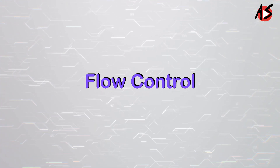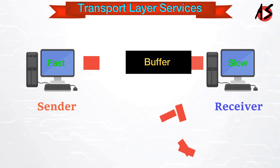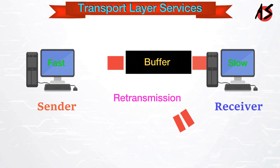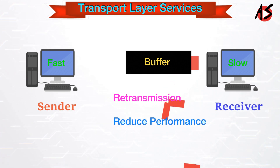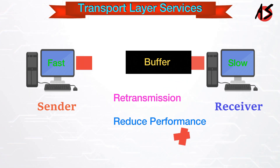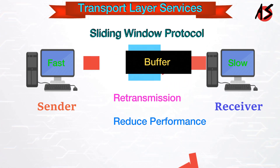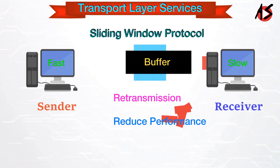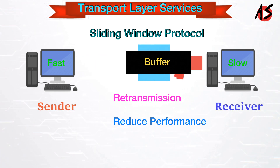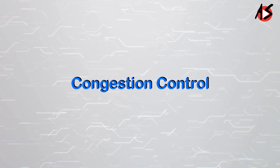Flow control: if the sender is fast and the receiver is slow, the receiver discards packets and asks for retransmission, which increases network congestion and reduces system performance. The transport layer is responsible for flow control. It uses the sliding window protocol, which makes data transmission more efficient and controls the flow of data by informing the sender of the size of data the receiver can accept.